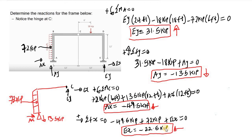So these are the final reactions: EY is 31.5 kip acting upward, AY is 13.5 kip acting downward, AS is 49.5 kip acting to the left, and ES is 22.5 kip also acting to the left.